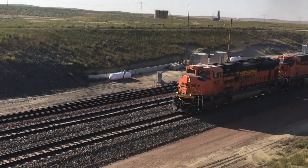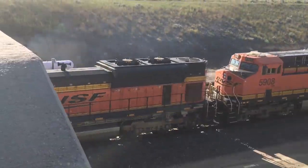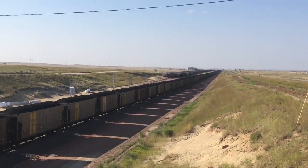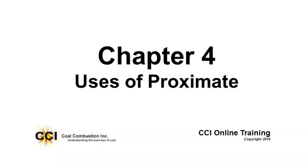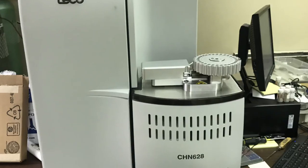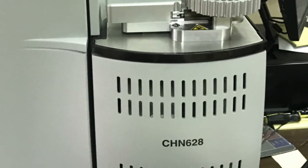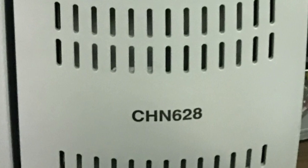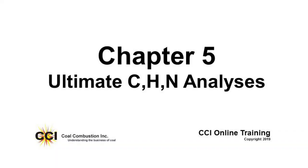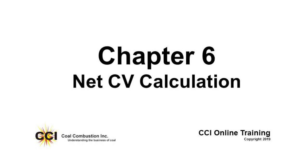In Chapter 4, we cover the use of the proximate analysis, where we determine the value of the coal using heating value, sulfur, ash, and moisture. In Chapter 5, we cover the ultimate analysis — the carbon, hydrogen, and nitrogen analysis — which helps us perform many of the combustion calculations.